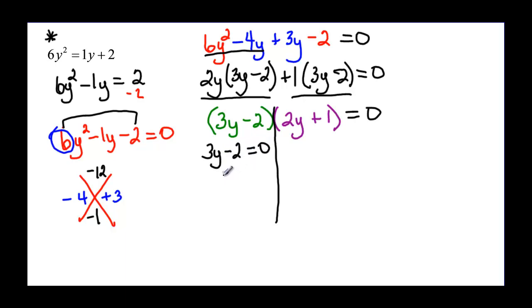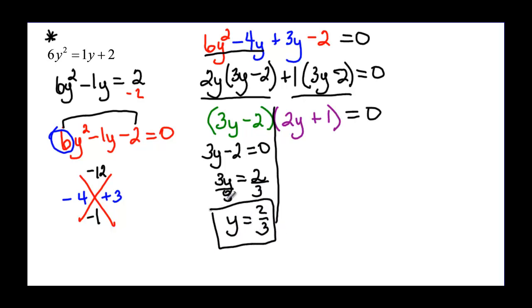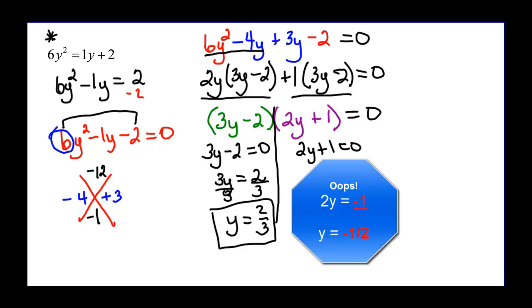Setting each factor equal to zero: 3y minus 2 equals zero — add 2 to both sides, then divide by 3 — y equals 2 thirds. And for 2y plus 1 equals zero — subtract 1 from both sides to get 2y equals negative 1, then divide by 2 — y equals negative one half.